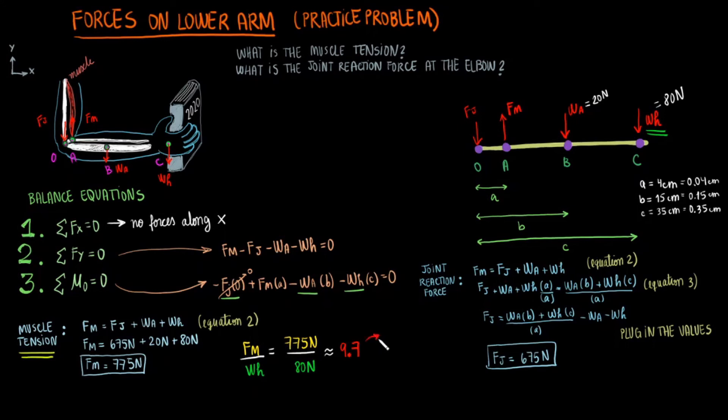Notice how the muscle tension force was so much higher than the weight of the object in the hand, almost 10 times that weight. This happens because the muscle is attached so close to the joint, it ends up having to pull much harder to lift the arm when you have a heavy object in your hands.